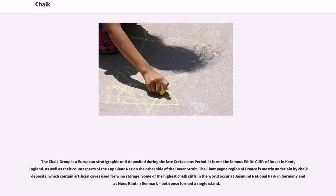The chalk group is a European stratigraphic unit deposited during the late Cretaceous period. It forms the famous White Cliffs of Dover in Kent, England, as well as their counterparts at Cap Blanc-Nez on the other side of the Dover Strait. The Champagne region of France is mostly underlain by chalk deposits, which contain artificial caves used for wine storage. Some of the highest chalk cliffs in the world occur at Jasmund National Park in Germany, and Møns Klint, Denmark, both of which once formed a single island.